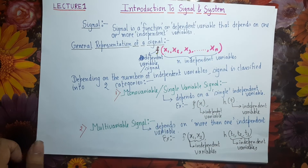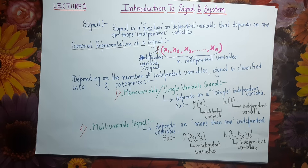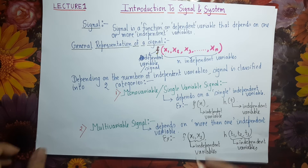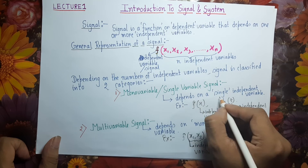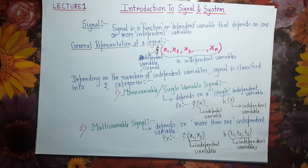Based on the total number of independent variables a signal depends on, a signal can be classified into two categories: the first is called a mono-variable or single-variable signal, and the second is called a multivariable signal. Mono-variable signals are those which depend on a single independent variable.